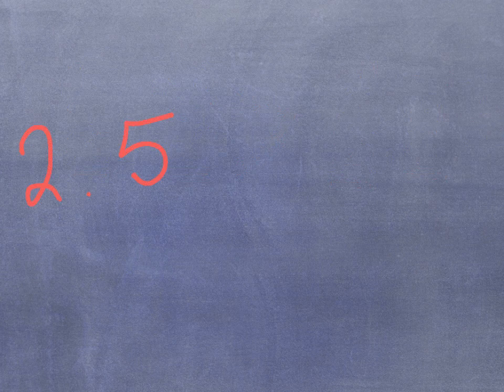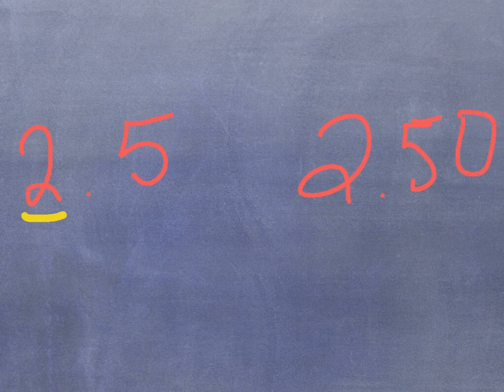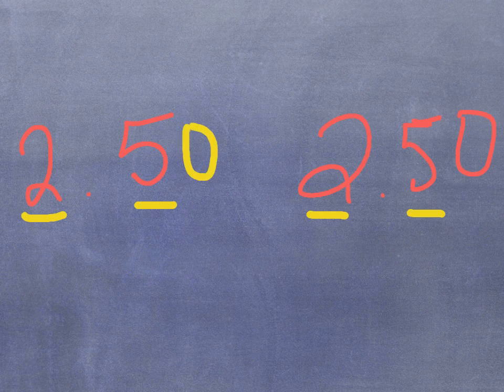Let's look at the next one. Let's say they have 2 and 5 tenths, and I want them to compare it to 2 and 50 hundredths. Again, if they go from place value to place value, they will see the 2 and the 2 are the same, the 5 and the 5 are the same, and the 0 and the 0 are the same because there's an understood 0 there in the middle.